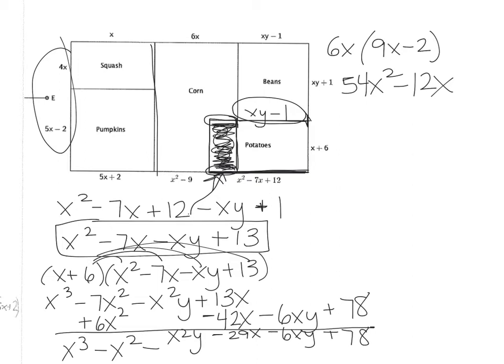So now let's combine all of that together. That then gives us x to the third minus x squared minus x squared y minus 29x minus 6xy plus 78, okay? So now that is the area of this piece here. So now what I have to do is take the area of the big cornfield, which you said was 54x squared minus 12x, and I have to subtract it from all of this.